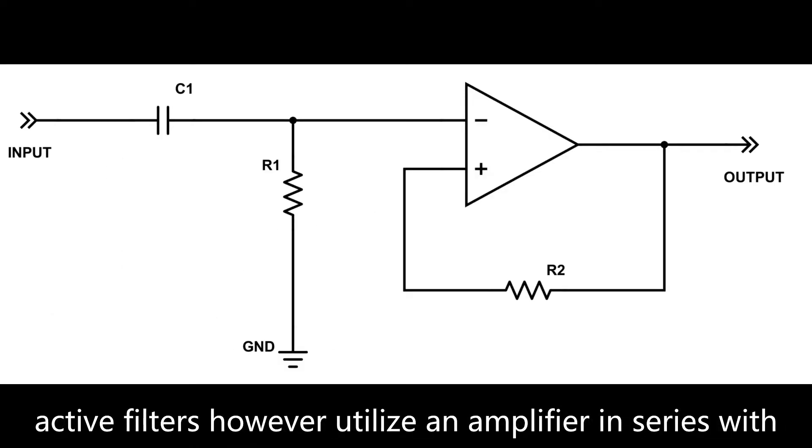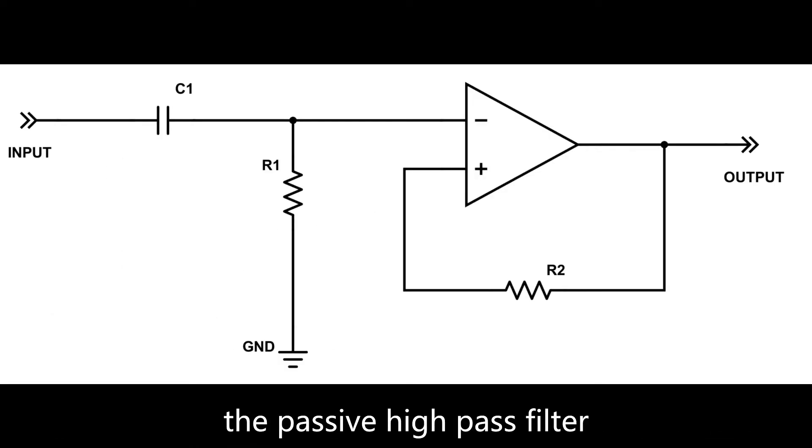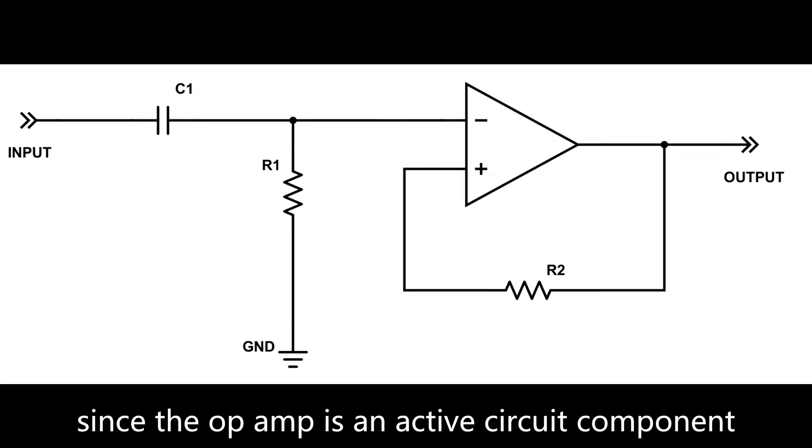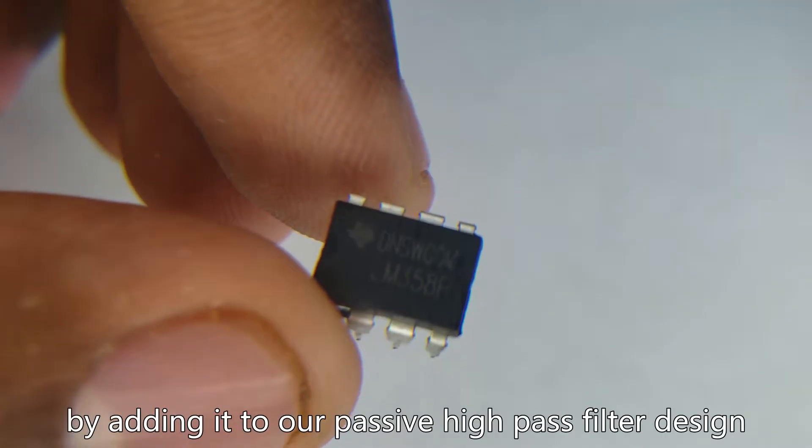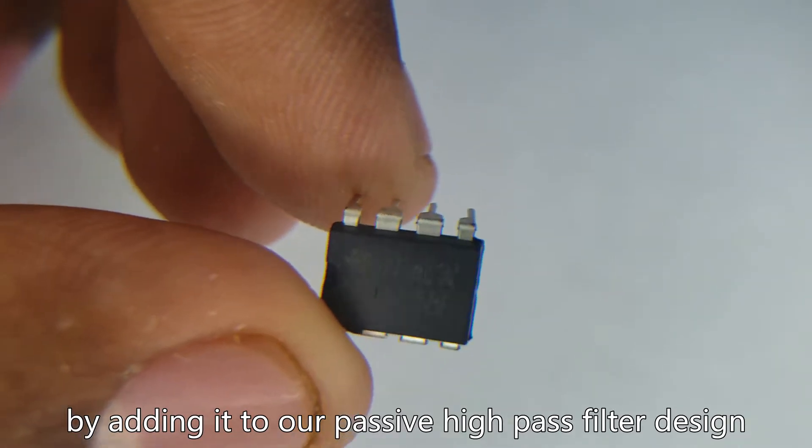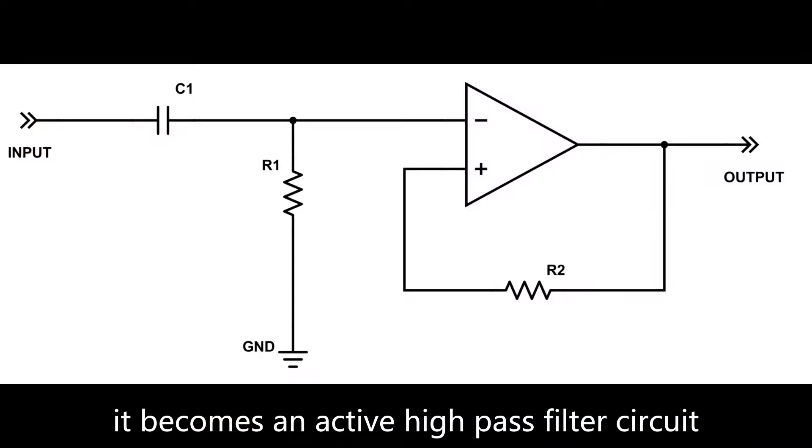Active filters, however, utilize an amplifying stage with a passive high pass filter. Since the op-amp is an active circuit component, by adding it to our passive high pass filter design, it becomes an active high pass filter circuit.